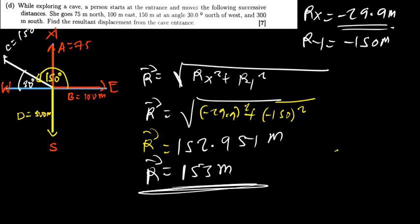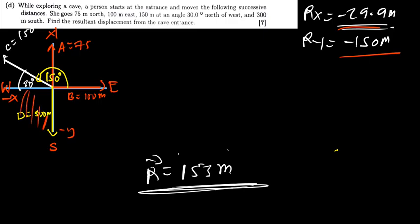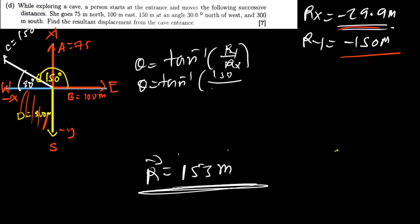That is the resultant of the vector. Then after finding the resultant of the vector, we need also to find the angle. Now I always mention, guys, you look at the signs. X is negative, Y is negative. The angle falls in the third quadrant. In the third quadrant when I use this formula, theta being equal to tan inverse of Ry divided by Rx. You ignore the negative but you also know that negative and negative will cancel out, 150 divided by 29.9.